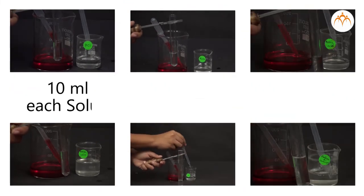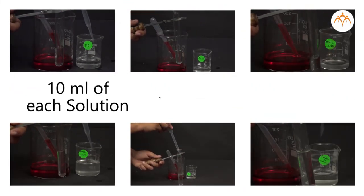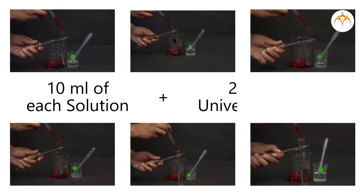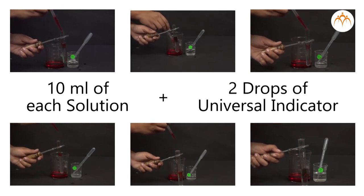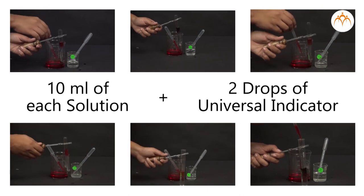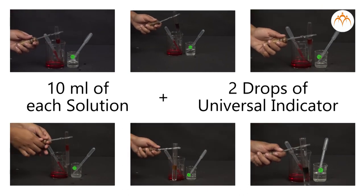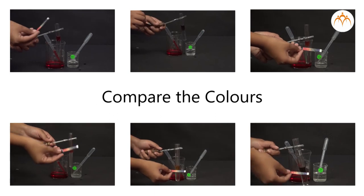We take 10 milliliters of each solution in one test tube each. We put two drops of universal indicator in each test tube with a dropper. We observe the color change in solution in each test tube.